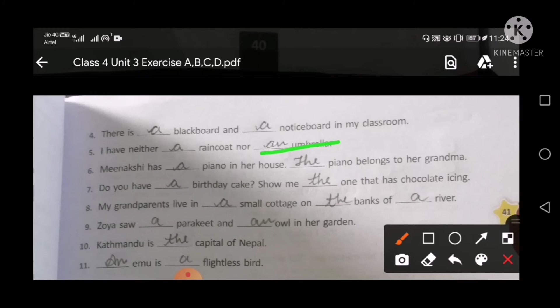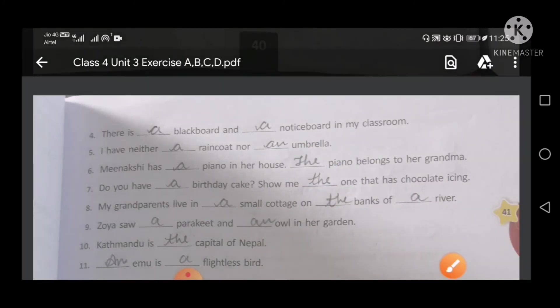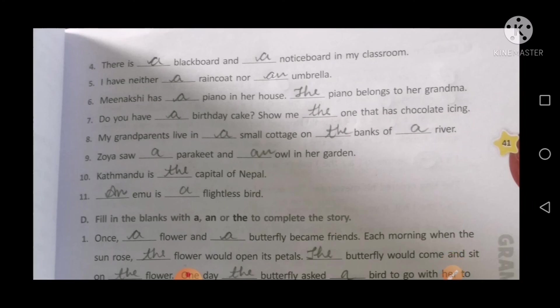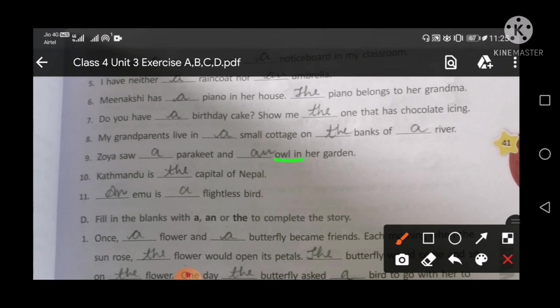Meenakshi has a piano in her house. The piano belongs to her grandmother. Do you have a birthday cake? Show me the one that has chocolate icing. My grandparents live in a small cottage on the banks of a river. Zoya saw a parakeet and an owl in her garden. Kathmandu is the capital of Nepal. An emu is a flightless bird.